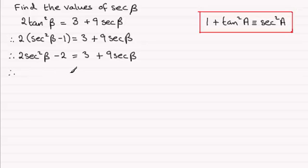So I'm going to subtract 9secβ from both sides and the 3. So that's going to give me 2sec²β. We'll put the minus 9secβ next. And then we've got minus 2 minus a further 3, which is going to be minus 5, and that's going to equal 0.